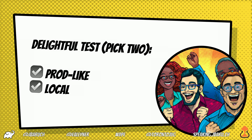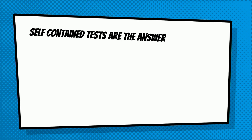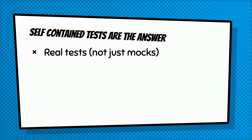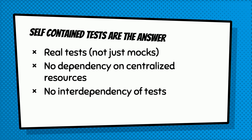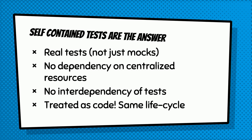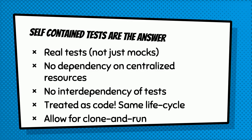So what do we want? To avoid the depressed bunny problem, we want production-like feedback, locally, and fast. We believe the answer is self-contained tests — some call them hermetic tests. Tests that are real, not just mocks, that have real dependencies, do not depend on any centralized resources, are self-contained with everything they need to run. There's no dependency between tests so you can run multiple simultaneously. They're treated as code with the same lifecycle, and they allow clone-and-run — you just clone a repo, have the tests, and off you go.